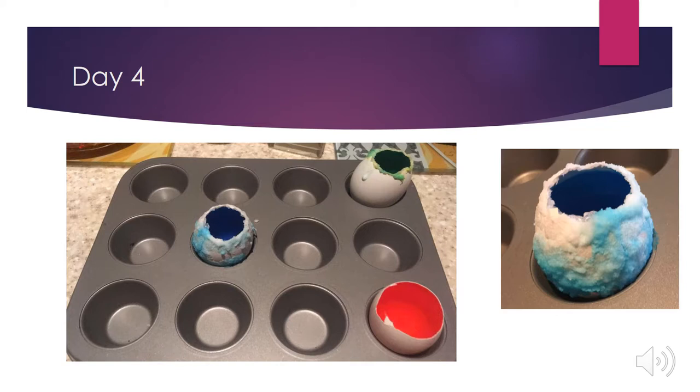On day four there was more crystal growth on the blue eggshell. The crystals began to surround most of the outside of the eggshell. For the green eggshell there was more crystal growth but still not as much as the blue, and there were still no crystals around the red eggshell.